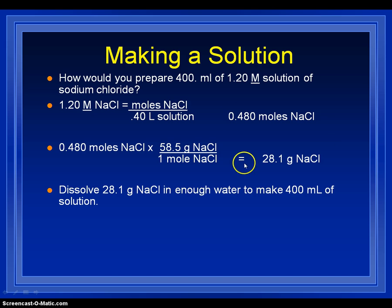So, when we make the solution, what we would do is we'd measure out this sodium chloride, and then we would add water to it until it reaches a volume of 400 milliliters. And there, I would have 0.48 moles in 400 milliliters, so I'd have a 1.2 molar solution.